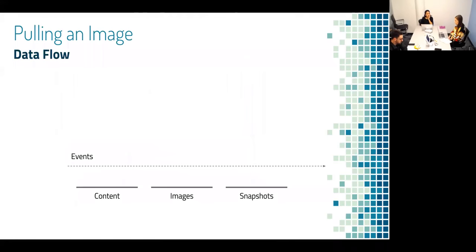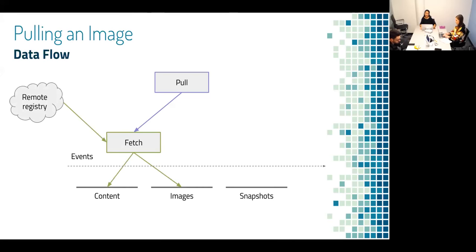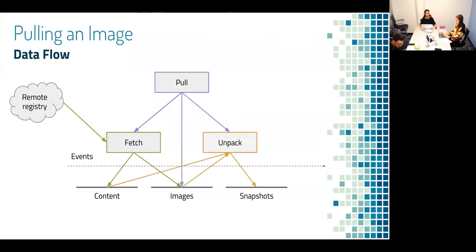I'm going to walk through how we can pull an image. A pull from the client perspective is just this pull call, but for ContainerD content, images, and snapshot services, we have various calls. We have a fetch, which pulls our content from the remote registry and puts the manifest list, layers, and all that into the content store. It also saves a reference — the digest, image name — in the metadata store. Then we go through unpacking that image, which pulls the content from the content service, and then unpacks the layers one on top of another. From the snapshot service, that's how we can generate those mounts later on.